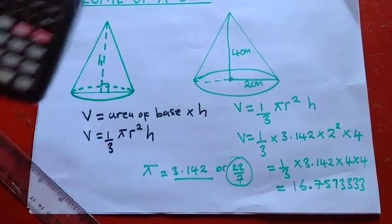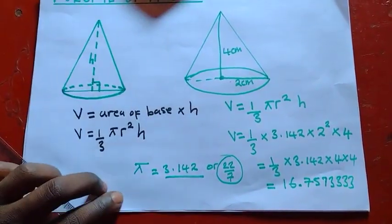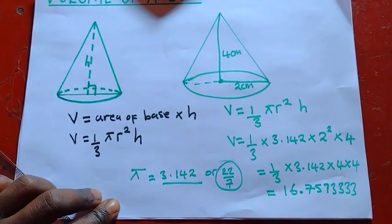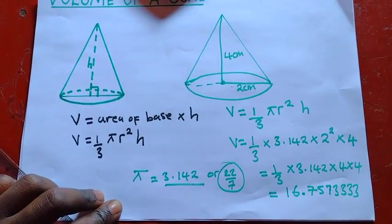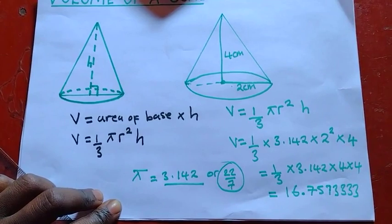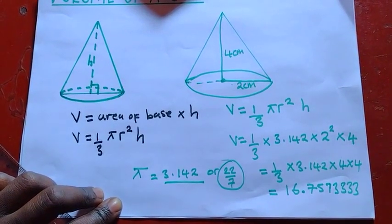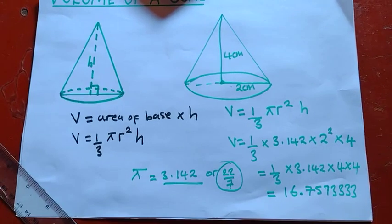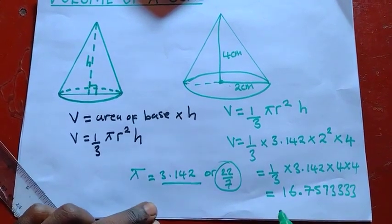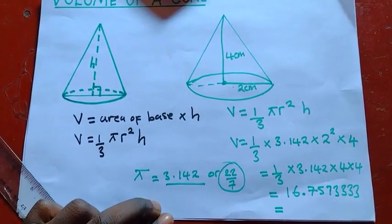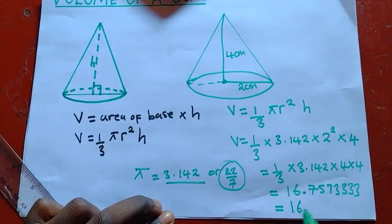So in an exam, they do specify that if the degree of accuracy is not specified in the question paper, leave your answer correct to 3 significant figures, okay? But if it's specified, maybe they have told you to leave your answer to 2 decimal places or 3 decimal places. You are delivered to do that.